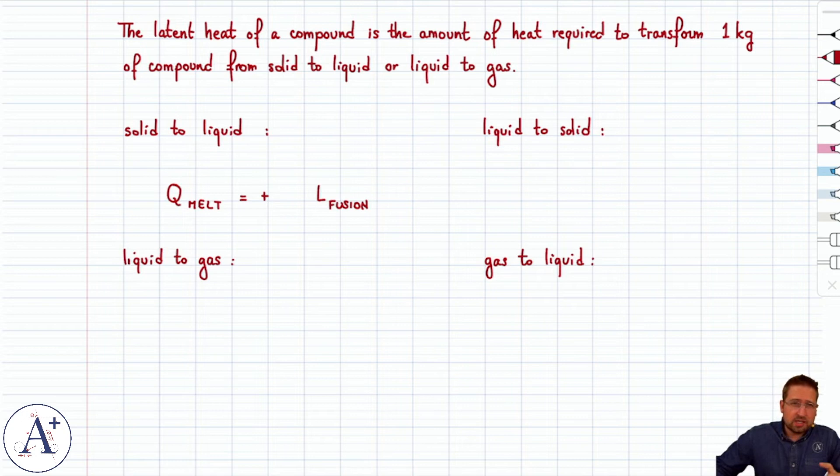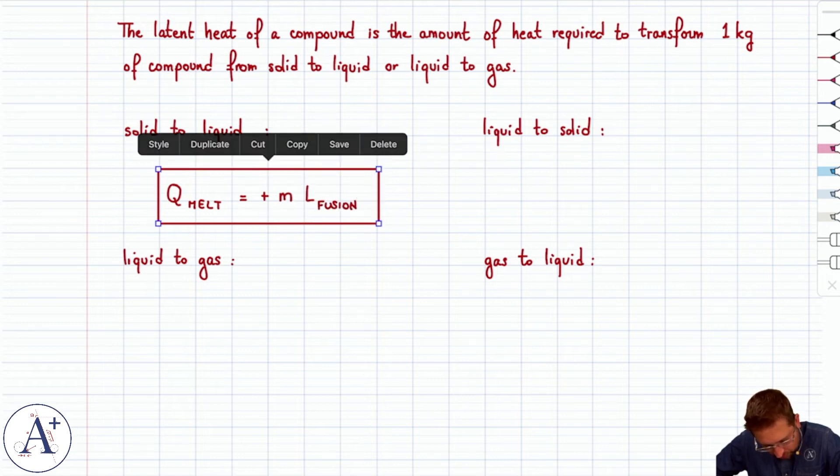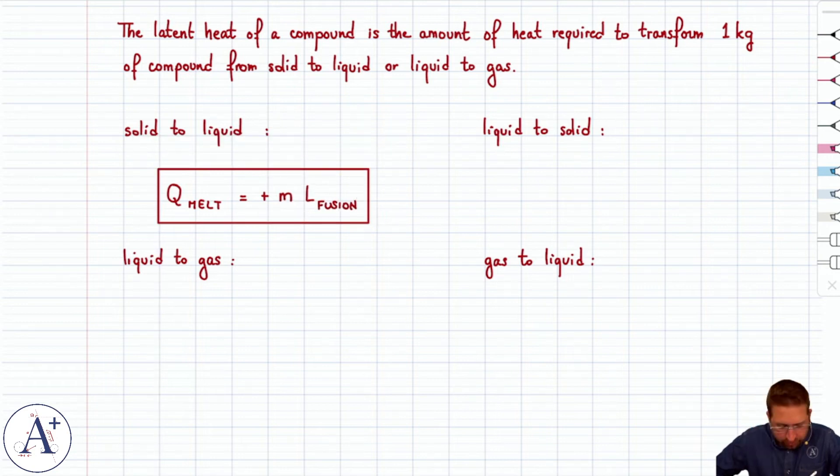And it's a positive amount of heat because it has to be supplied to the compound. And the latent heat is the amount of energy per kilogram of compound. And so we'd have to multiply this by the mass m of compound that we are trying to take from solid to liquid phase. So Q melt is going to be plus mL fusion.